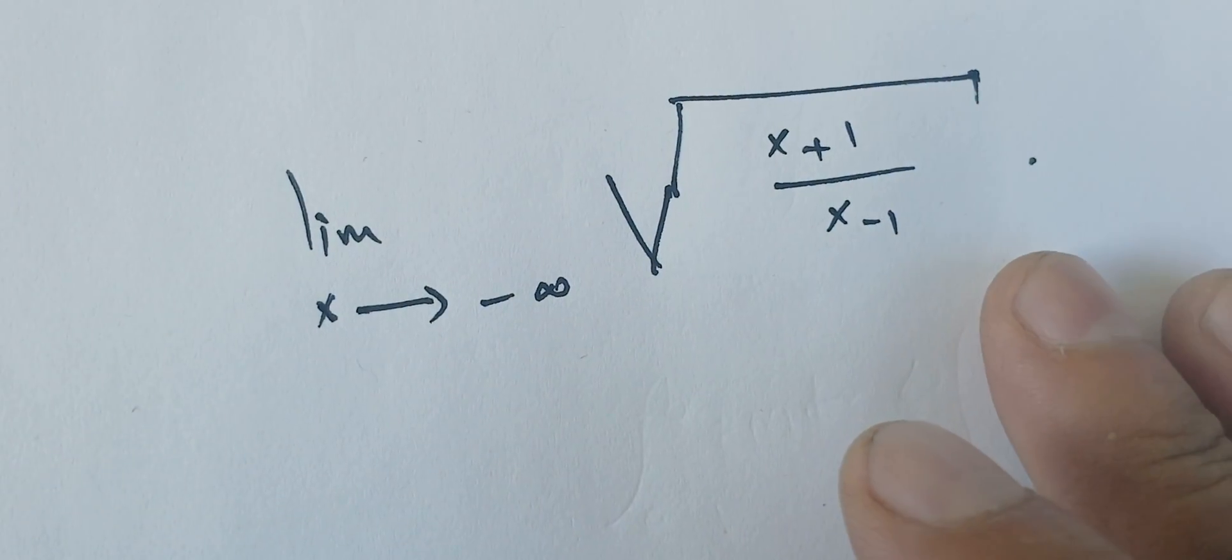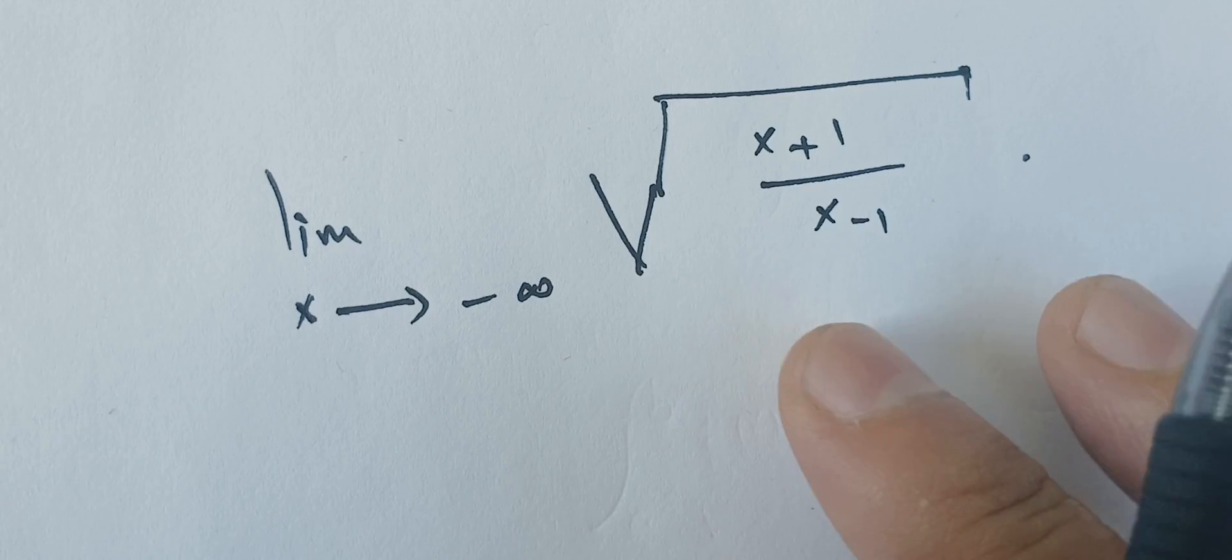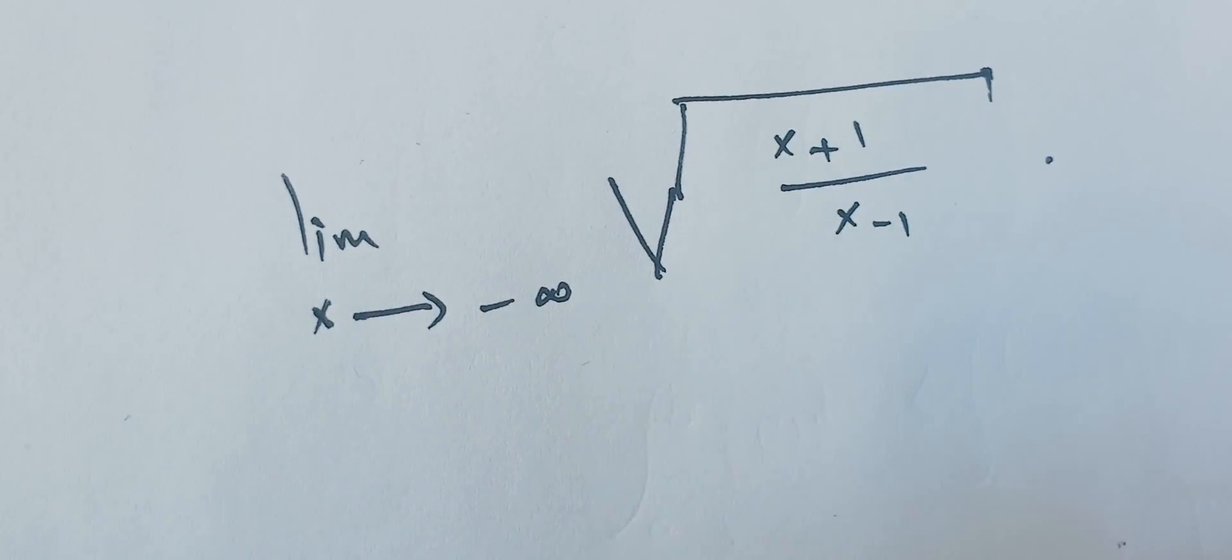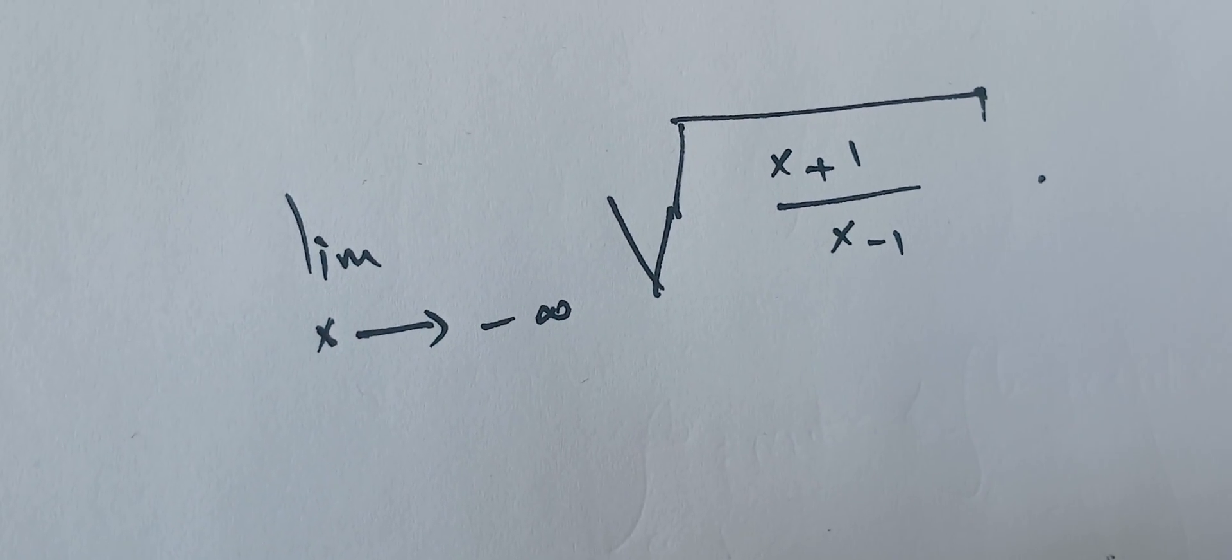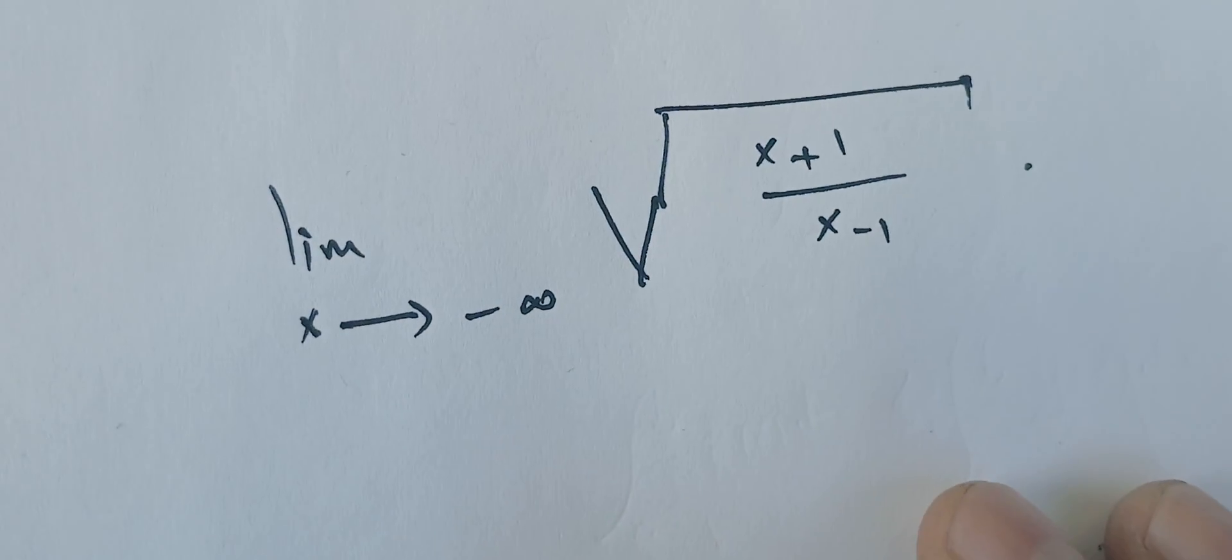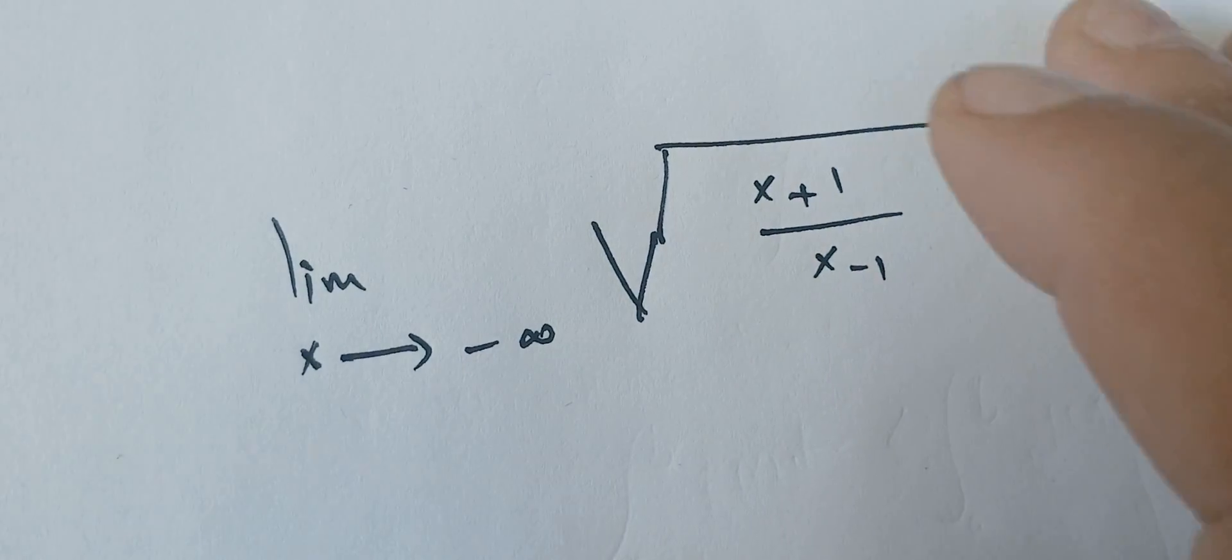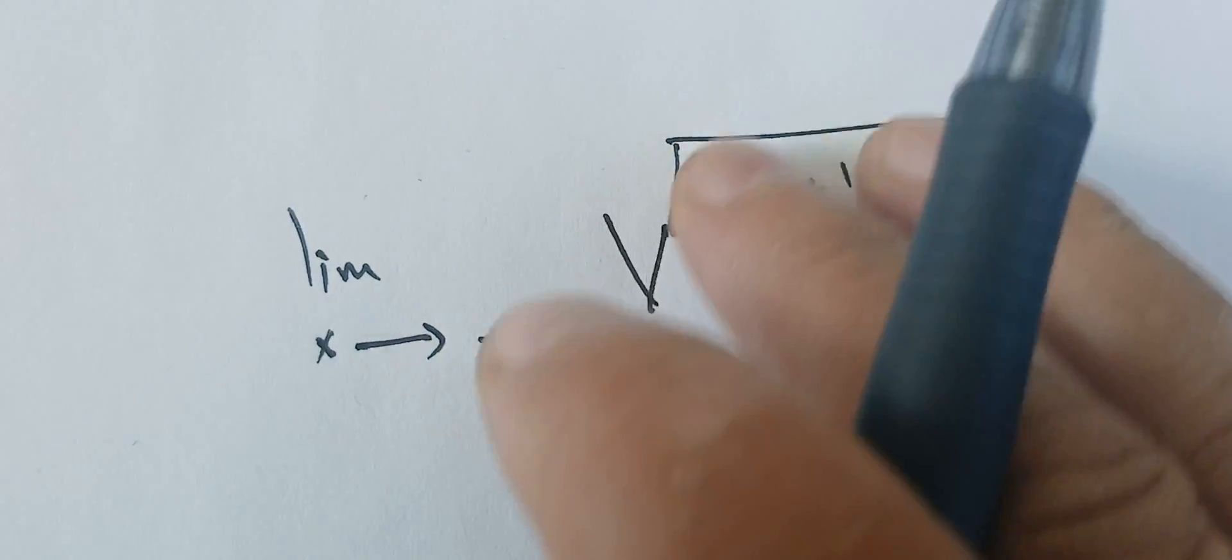In this video we're going to find the following limit. Our function is the square root of x plus 1 over x minus 1, and the limit is at infinity.